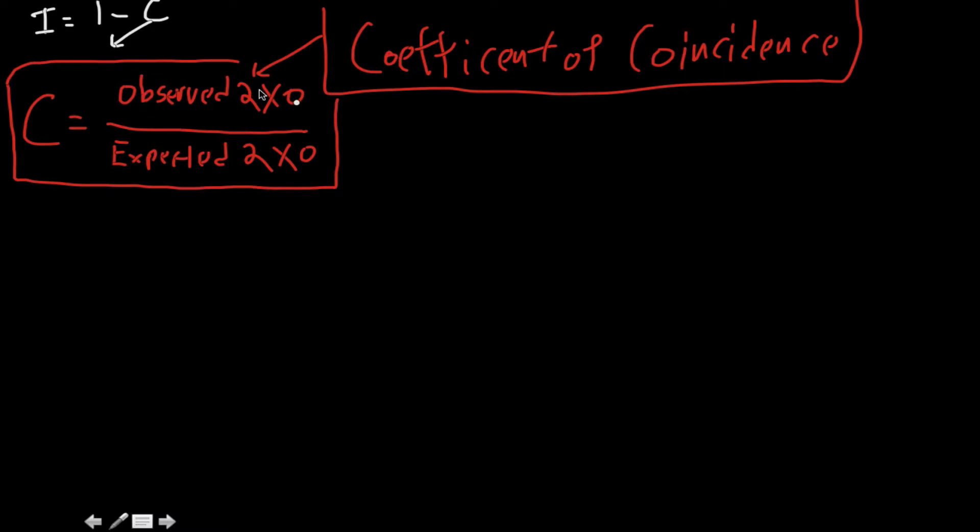But how do we figure out what our expected double crossovers are? So, to do this, we do the product rule. Remember, the product rule says that we multiply the two probabilities together because if we're usually given it in a specific order. Does this pertain to order? Yes, this pertains to the order. So you're going to multiply the individual probabilities.